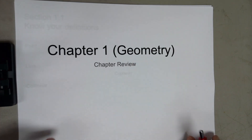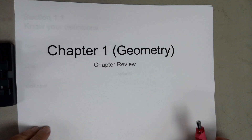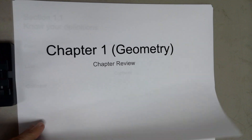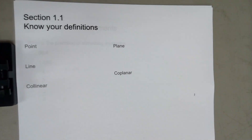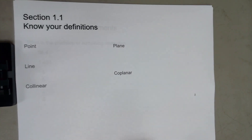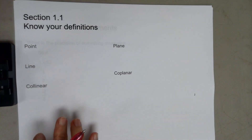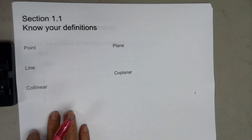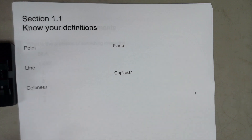This is the chapter review of chapter 1. Make sure you know your definitions — there will be definitions on the test. Now some of these are somewhat open-ended definitions, so it's hard to make an exact definition. You'll have to be able to illustrate it and do the best job you can.